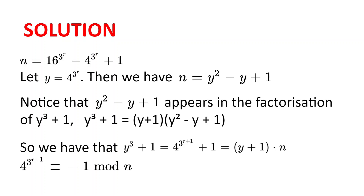And so 4 to the power of 3 to the power of r plus 1, plus 1, is congruent to 0 modulo n. And so 4 to the power of 3 to the power of r plus 1 is congruent to minus 1 modulo n.